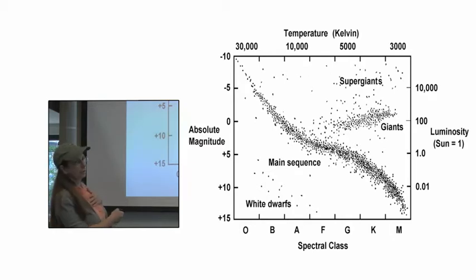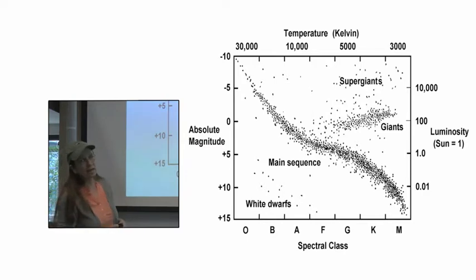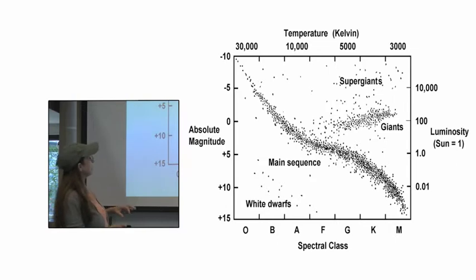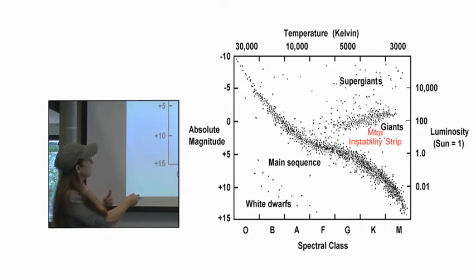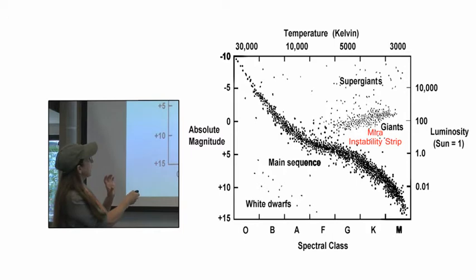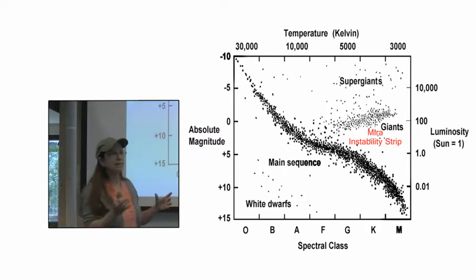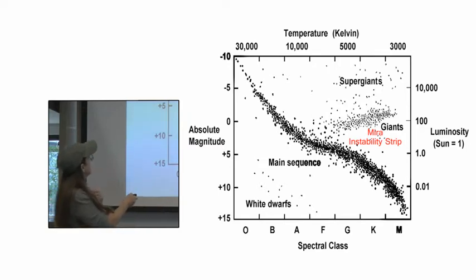There are various branches: the main sequence, the white dwarfs, the supergiants, the giant branch, but there are other areas that stars reside on the H.R. diagram, especially ones that are transitioning through variability in their stages. The Mira instability strip — as stars like Sun-mass sized stars ascend up to the red giant branch, they go through a period where they pulsate back and forth as a Mira variable.